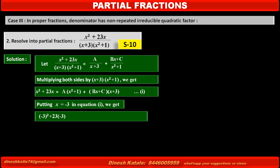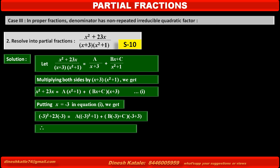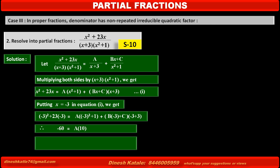Replacing x by -3: the left-hand side becomes (-3)² + 23×(-3). On the right-hand side, the first term becomes A[(-3)²+1] and the second term becomes (B×(-3)+C)×(-3+3). Solving, we get -69 + 9 = -60 = A×10, therefore A = -6.